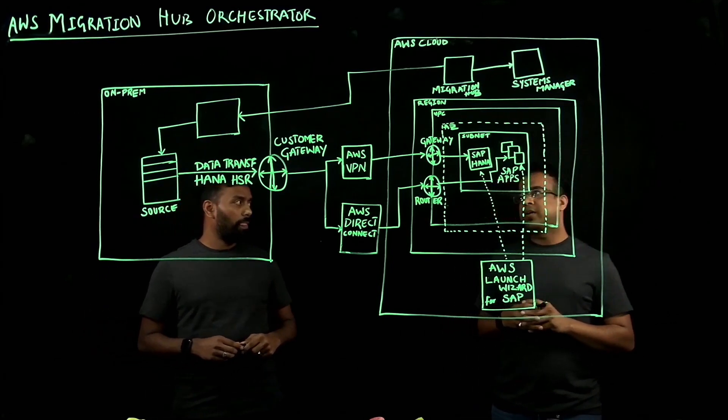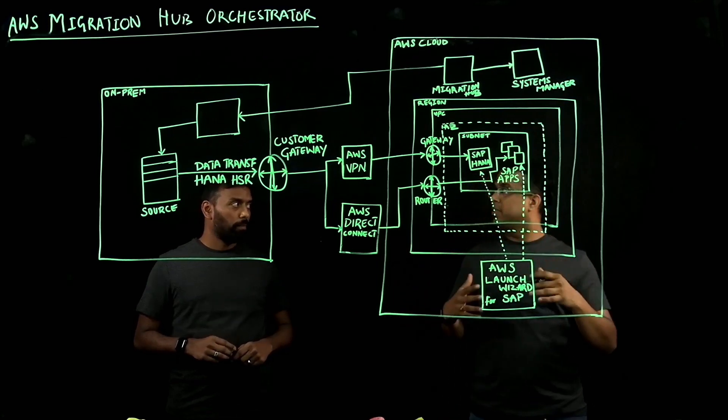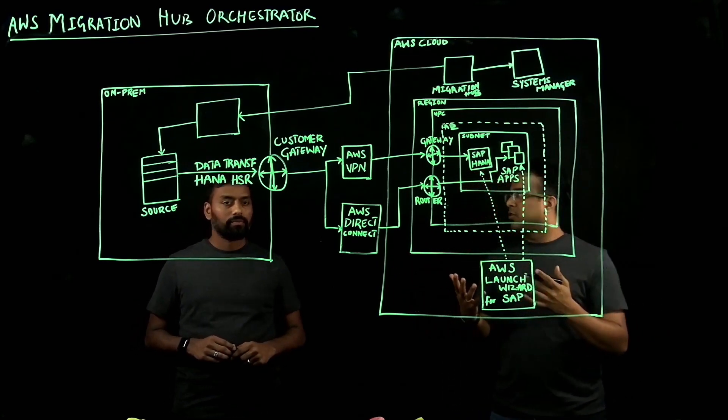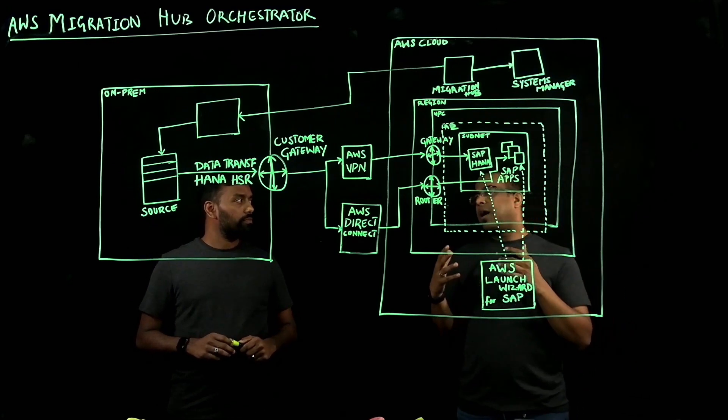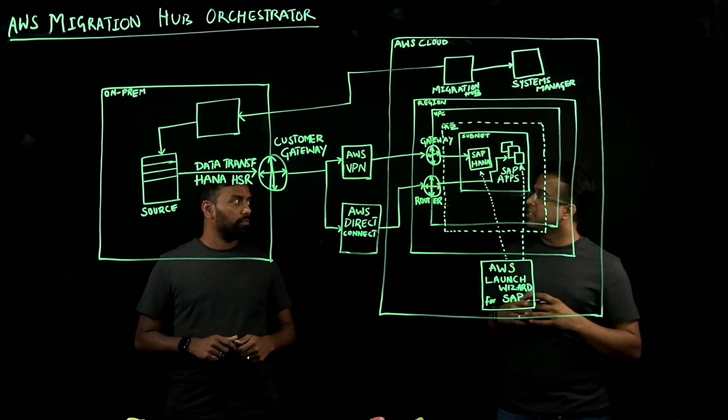Awesome. Thank you, Venkat. That explains both the scenarios, how customers can automate the migration process. Now, we know about what is AWS Migration Hub Orchestrator. How can we get started? What can customers do today to get started using Migration Hub Orchestrator?